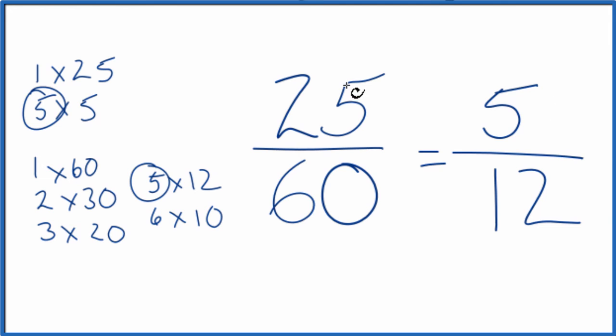And these are equivalent fractions. 25 divided by 60, 5 divided by 12, you get the same number. It's just that we've simplified 25/60 to 5/12.